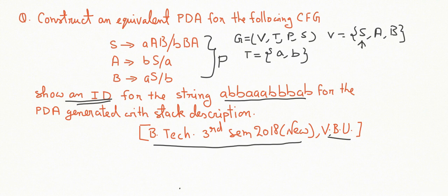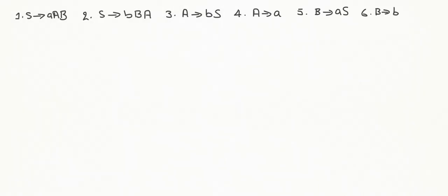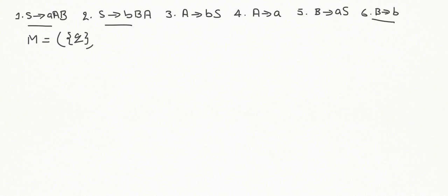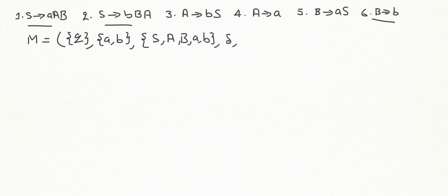We number the production rules. There are six production rules. Equivalently, we can construct a PDA M = (Q, Σ, Γ) where Γ is V union T, so {S, A, B, a, b}. Delta is defined accordingly, with initial state Q naught, initial stack symbol Z naught, and we are going to use acceptance by empty store.